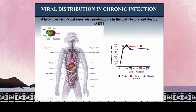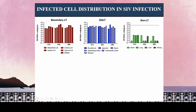One of the questions we wanted to ask is: where do viral reservoirs predominate in the body prior to and during antiretroviral therapy? We took a holistic approach, performing a pilot study in which we sacrificed animals during the acute stage, early chronic stage, or later chronic stage. We serially sacrificed the animals, collected all of the major organs throughout, and performed quantitative in situ hybridization to look at the abundance of productively infected cells as well as FDC-trapped virus within lymphoid tissues and other organ systems.